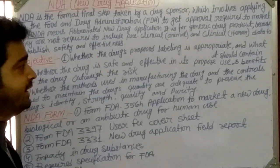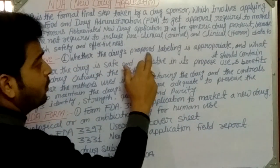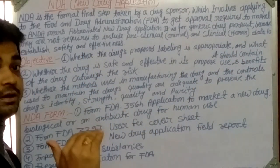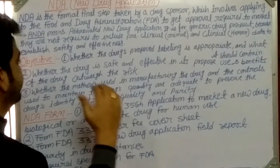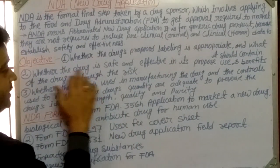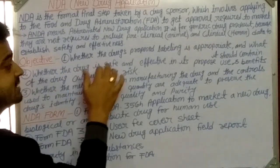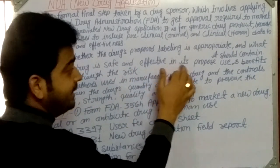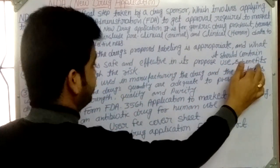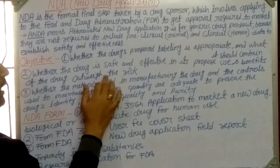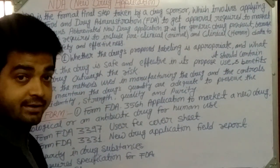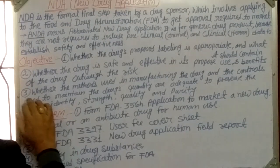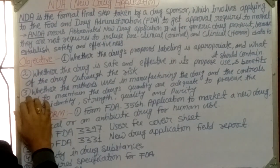The main objectives of the NDA are: first, to confirm whether the proposed labeling of the drug is appropriate and what it should contain. Second, to determine whether the new drug is safe or unsafe and effective or not effective for its intended use, and whether the benefits of the drug outweigh the risks — verifying safety, quality, and effectiveness parameters.